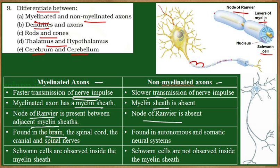Myelinated neurons are found in the brain, spinal cord, and some cranial and spinal nerves. Non-myelinated axons are found in the autonomic and somatic neural systems of the peripheral nervous system. The Schwann cells are present on the myelinated axon and secrete the myelin sheet — their nuclei can be seen on the myelinated axon. In non-myelinated axons, these Schwann cells are absent. These are the differences between myelinated and non-myelinated axons.